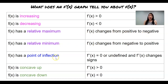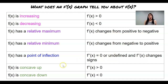A point of inflection is where f double prime equals zero or is undefined, and f double prime also has to change signs. We know that f of x is concave up when the second derivative is positive and concave down when the second derivative is negative.